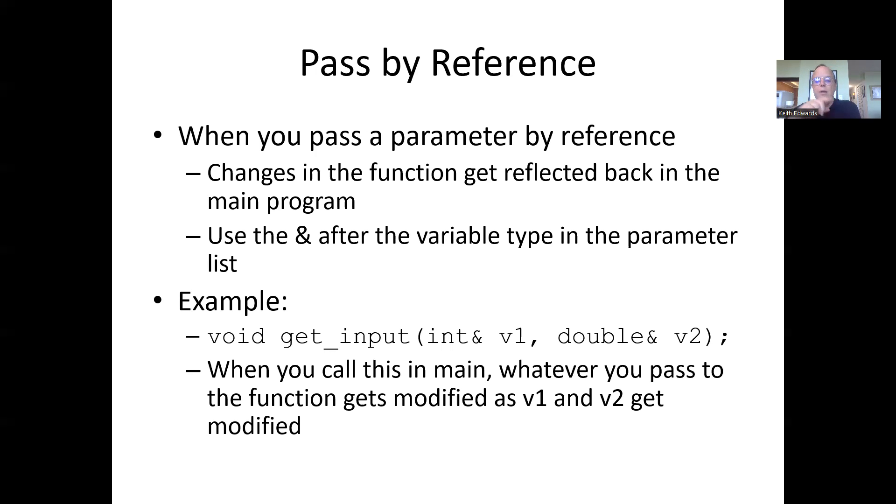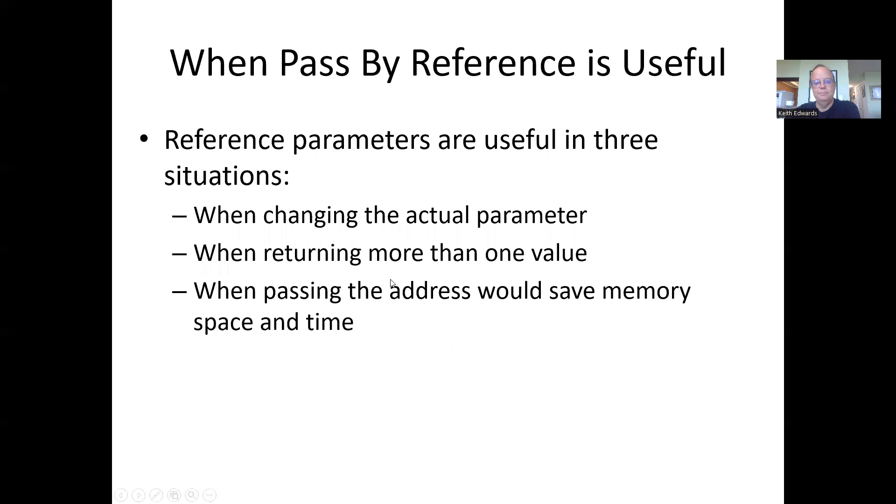When this gets called in main, whatever you pass to the function gets modified back in main. When I change v1, whatever it is in main gets modified, and same when I change v2—whatever it is back in main also gets modified.